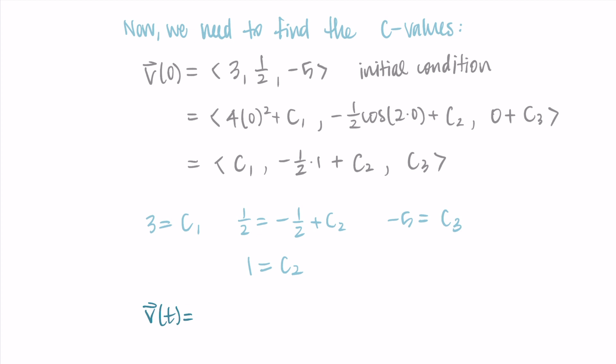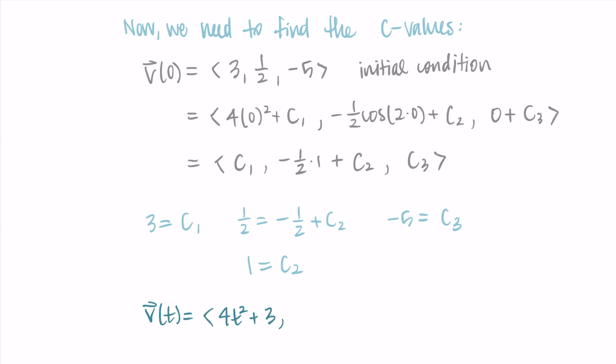Replacing the c values with what I found, the velocity vector is v(t) = ⟨4t² + 3, -½cos(2t) + 1, t - 5⟩. That's the velocity vector — I'm halfway there, now I just need to do the same process to find the position.